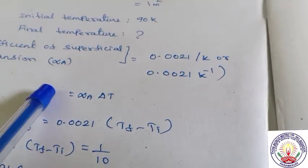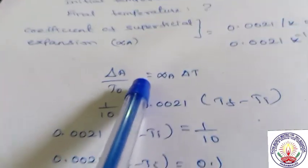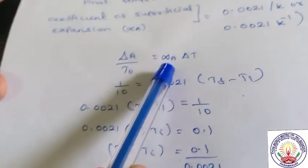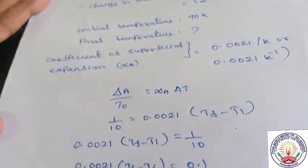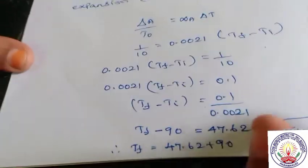The formula is: delta A divided by A0 is equal to alpha times delta T. We use this to find the final temperature.